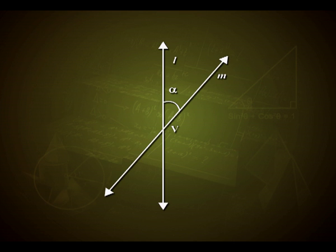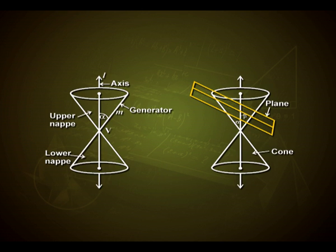We can see in the figure here on the monitor: line L is fixed and line M is the generator, which rotates around line L with constant angle alpha. We can see two cones generated as the upper nappe and the lower nappe, with line M rotating along with constant angle alpha.